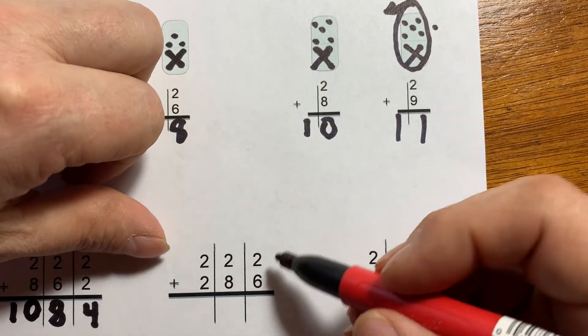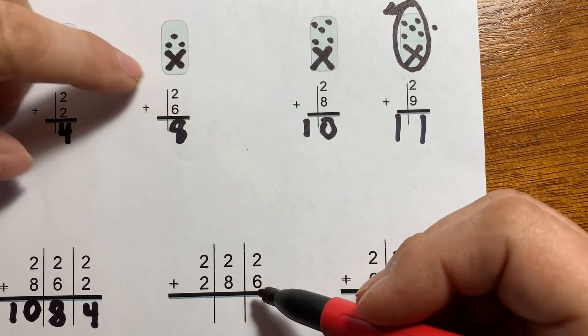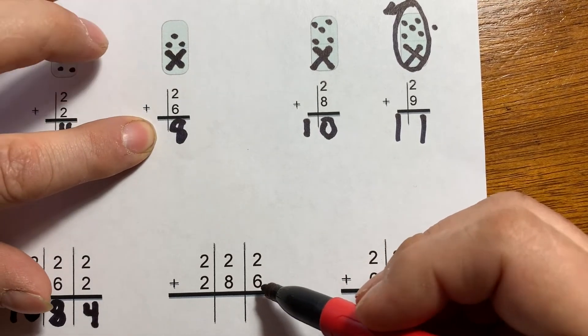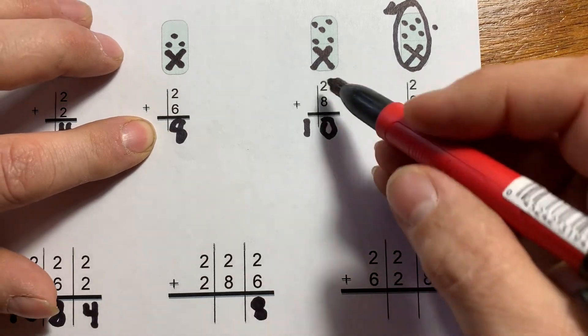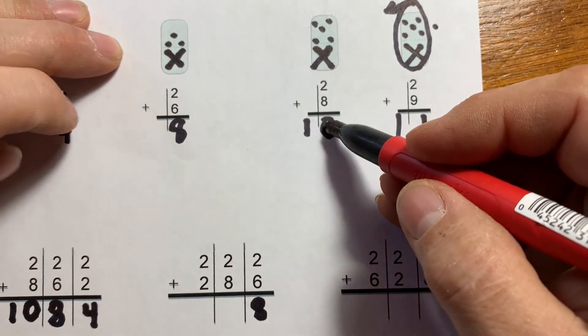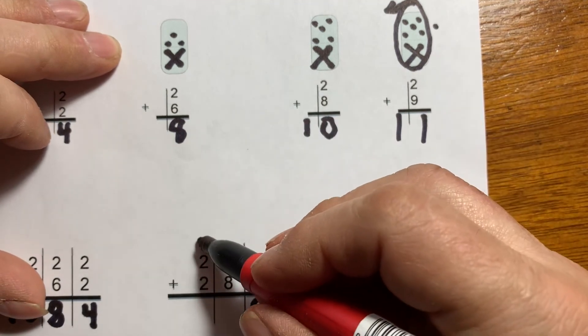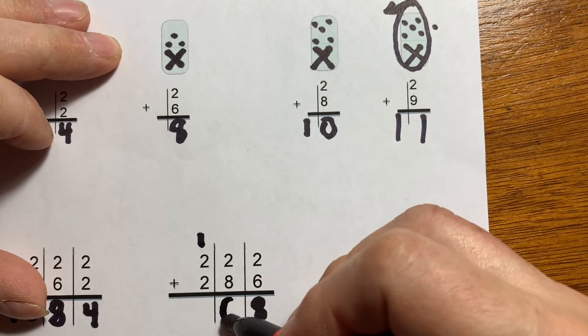Okay, let's look at the next. Six plus two, eight. Eight plus two is ten. One ten, zero extra ones. One ten, zero extra ones.